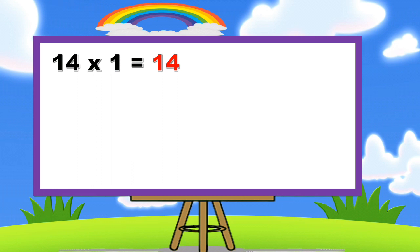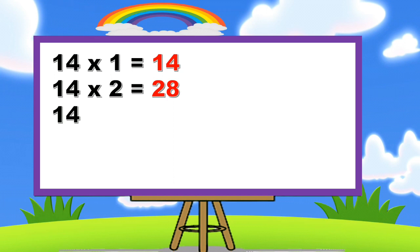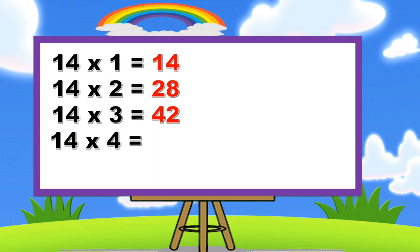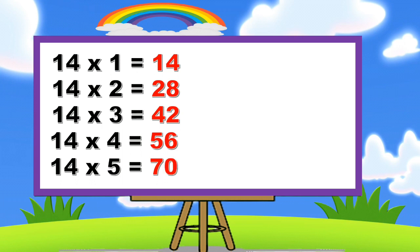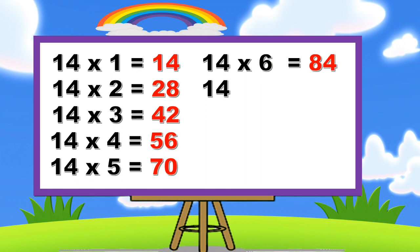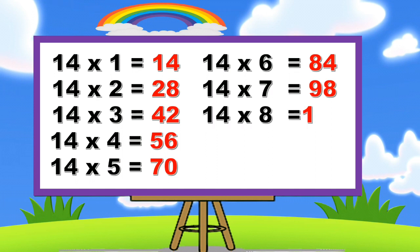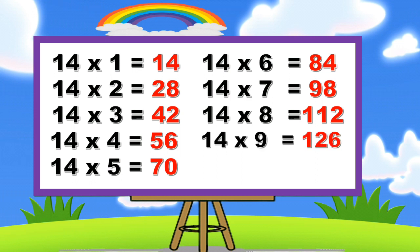14 one's a 14. 14 two's a 28. 14 three's a 42. 14 four's a 56. 14 five's a 70. 14 six is 84. 14 seven's a 98. 14 eight's a 112. 14 nine's a 126. 14 ten's a 140.